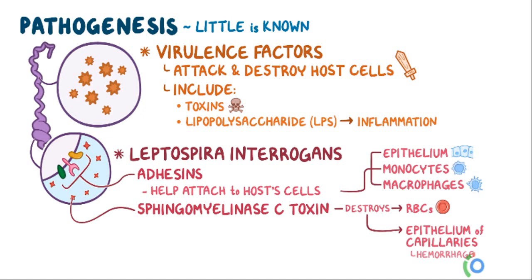Here are some pathogenesis and virulence factors that attack and destroy host cells. These include toxins and lipopolysaccharide that cause inflammation — for example, Leptospira enterotoxins. It causes adhesions that help attach to host cells, usually epithelium, monocytes, and macrophages. It also causes sphingomyelinase C toxins that destroy red blood cells and epithelium of the capillaries, causing hemorrhage.